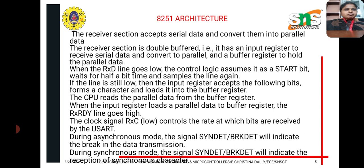The purpose of the receiver section is to accept serial data and convert it to parallel data. Since the receiver section is double buffered, the input register is used to receive and convert data to parallel. If the ready line goes low, there is a start bit and it waits for a time period; the CPU then reads the parallel data from the buffer register. There are two modes: asynchronous and synchronous. During synchronous mode, the signal indicates reception of the synchronous character. During asynchronous mode, the signal indicates a break in the transmission.